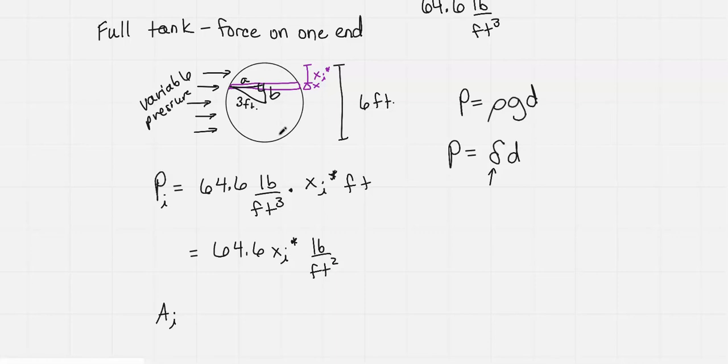Looking at B, if we go from the center all the way out to the circle, that's 3 feet, because that's just the radius. We also know that this top portion of that vertical line is our x depth. That's how far we went to get to that ith slice. If the whole thing is 3 and the little piece above is x, then B would be 3 minus x sub i star.